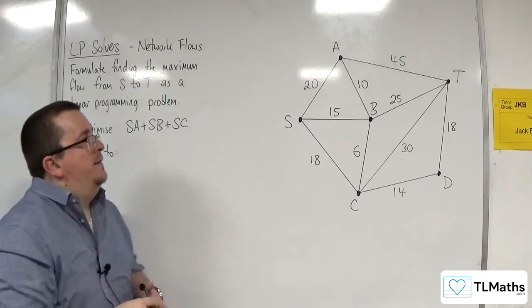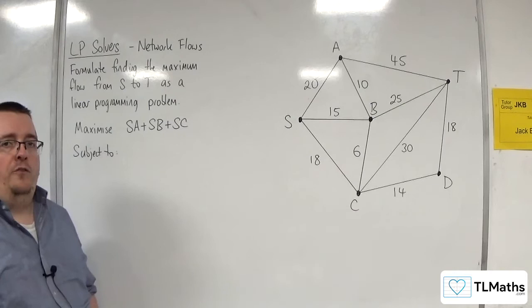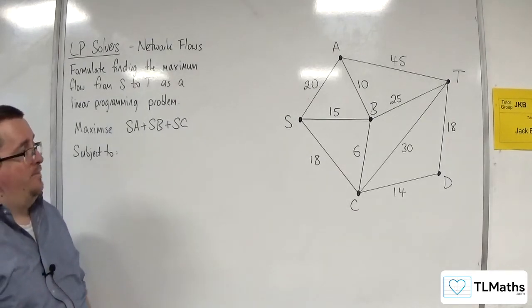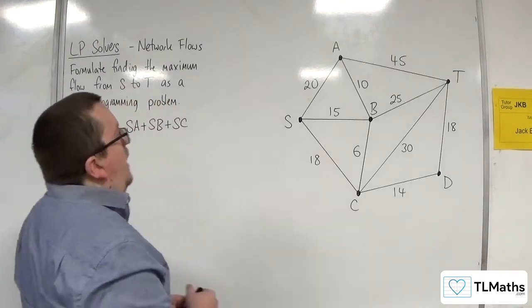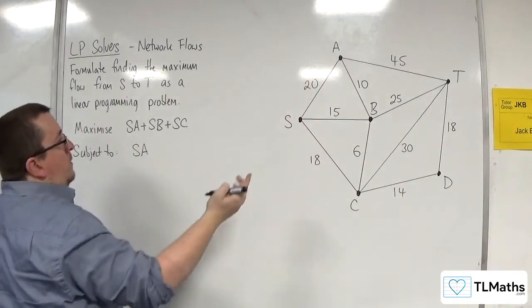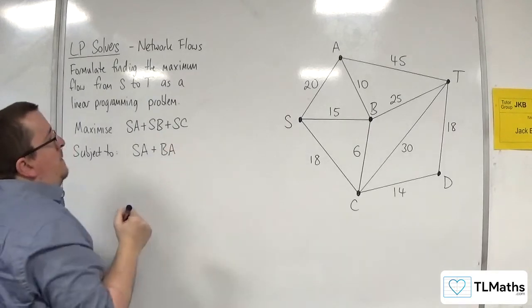Now, the flow in has got to equal the flow out for all of the other vertices, so for A, B, C, and D. So, for A, the flow in will be SA or BA.